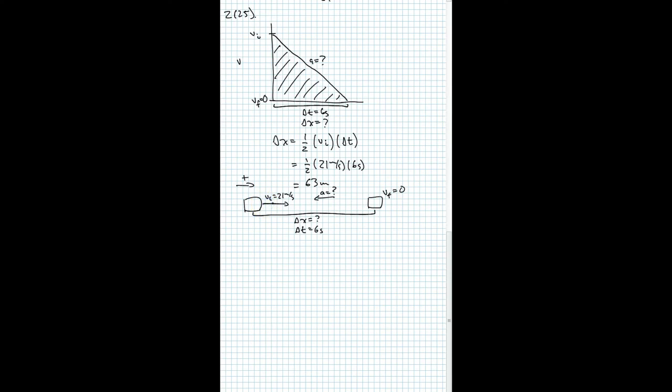And the model that we want here is the one derived from the average velocity expression: 1/2(VI + VF) times delta T. VF is 0, so this gives us 1/2 VI delta T, which we calculated was 63 meters.